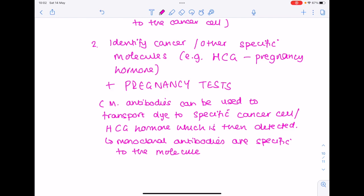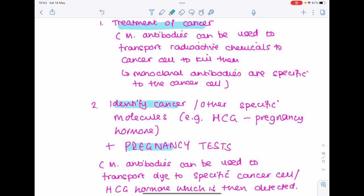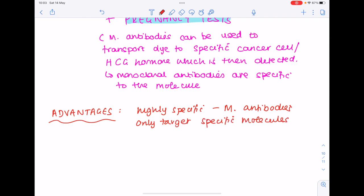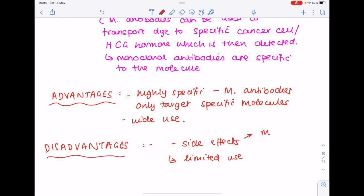So these uses, even though they sound completely different, are really sensible if you consider how a monoclonal antibody actually works. In terms of advantages versus disadvantages, these are kind of like oxymorons because we say that they are highly specific. Monoclonal antibodies only target specific molecules, so potentially wide use. However, also mentioned are the disadvantages which is there have been quite a few side effects which are unpleasant, leading to limited use. Those side effects arise from the fact that you're using the mouse antibodies.